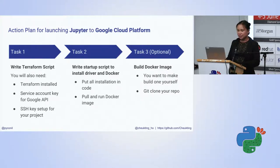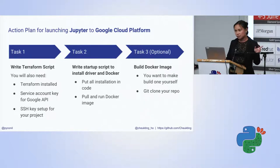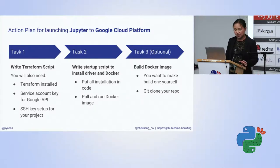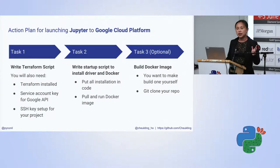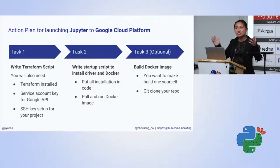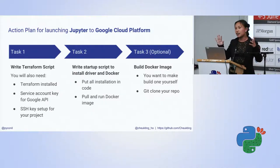So I had to mix everything together. Here's what I did: first, I wrote a Terraform script to launch a GCP instance — it's in code, so every time I launch it I know exactly what I'm getting, with a GPU accelerator attached. For that I need a Google API account key — you can set it up and download the login JSON file — and also an SSH key. I also needed a startup script for that instance to add the GPU accelerator and install the GPU driver.